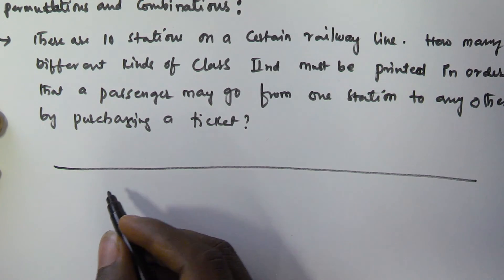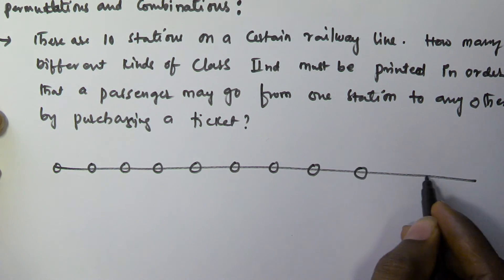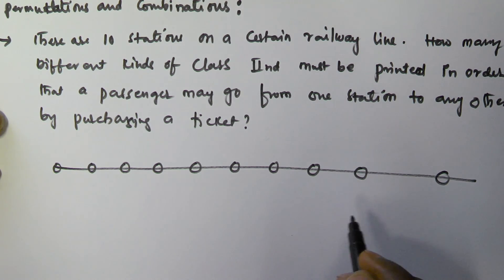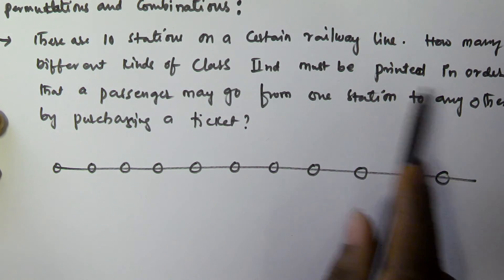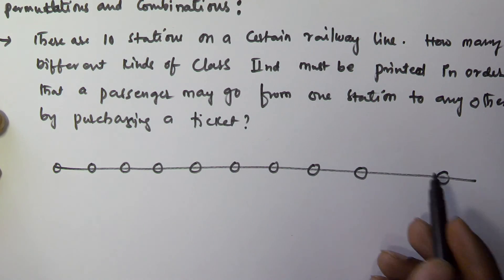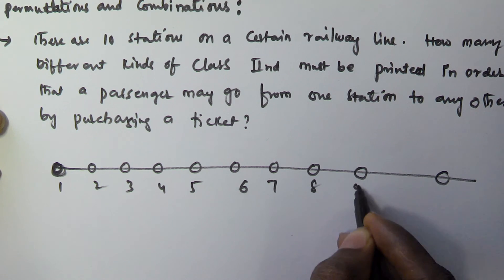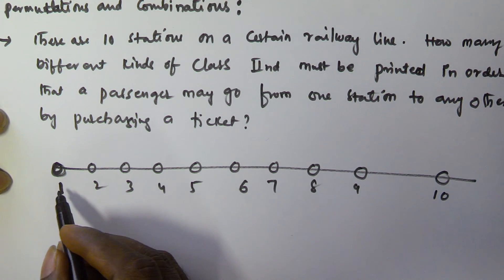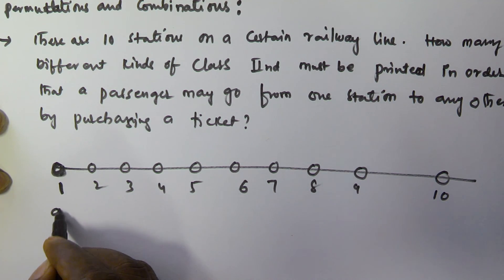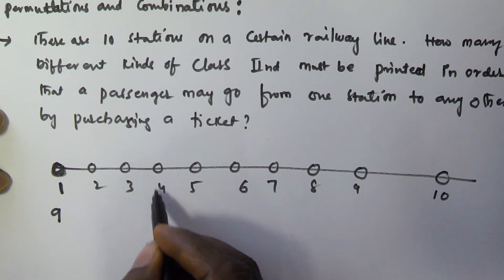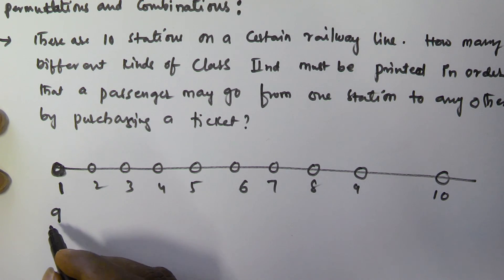So there are 10 stations: one, two, three, four, five, six, seven, eight, nine, and ten. From each station, the passenger may go to the remaining nine stations. So the first station must contain nine different kinds of tickets to go to the second, third, fourth, fifth, sixth, seventh, eighth, ninth, and tenth stations.